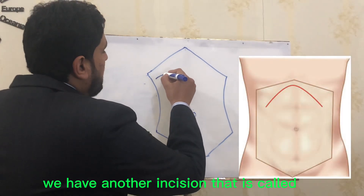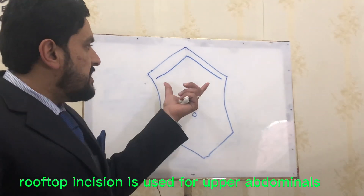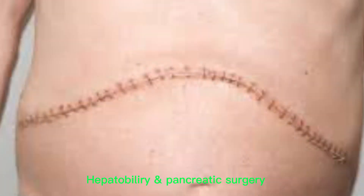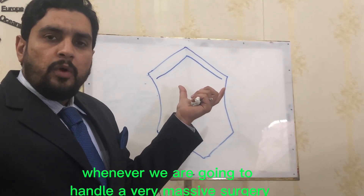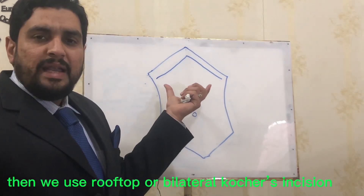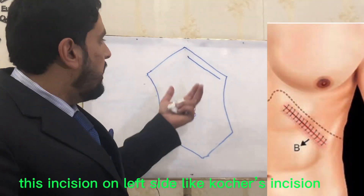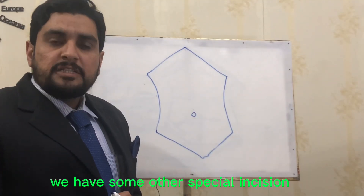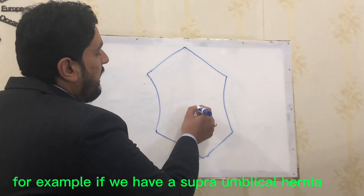We have another incision called the bilateral Kocher or rooftop incision. The rooftop incision is used for upper abdominal surgeries, hepatobiliary surgeries, pancreatic surgeries, and stomach surgeries. Whenever we are going to handle a very massive surgery, we use the rooftop or bilateral Kocher incision. The left subcostal incision, like a left-sided Kocher incision, is used for splenectomy.